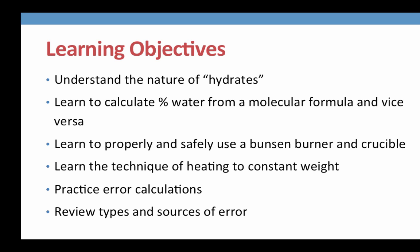In the experimental, we will learn to properly and safely use a Bunsen burner and a crucible, and we will learn the technique of heating to constant weight. Once we've collected our data, we will practice error calculations and review the different types and sources of error.